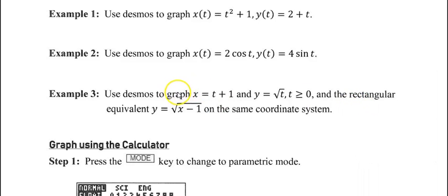For our third example, we want to use Desmos to graph x equals t plus 1 and y equals square root of t, where t is greater than or equal to 0. We're going to graph that parametric set of equations on the same graph as the rectangular equivalent, which is y equals square root of x minus 1.